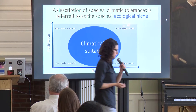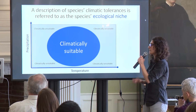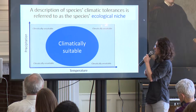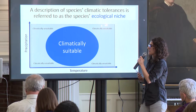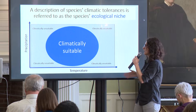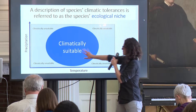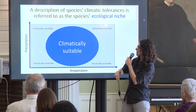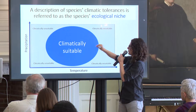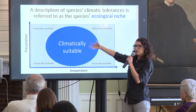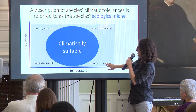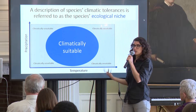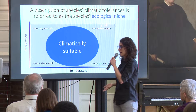When we think about species' climatic tolerances, we often describe that as the species' ecological niche, where all the climate that is known to be suitable for the species would be described in this sort of blue blob. Here's temperature and precipitation — any region that has that climate would be deemed a region where you would expect the species to be found. Any region with climate outside the species' ecological niche would be one where you would not expect the species to be found.